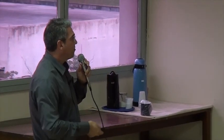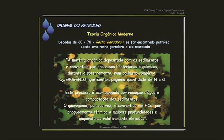Na década de 60 e 70, se definiu o que chamamos de teoria orgânica moderna, e a partir daí não houve mais dúvida de que o petróleo é uma substância orgânica derivada de organismos vivos. Essa teoria formulou o conceito de rocha geradora: se for encontrado petróleo, sempre haverá uma rocha geradora associada a ele.